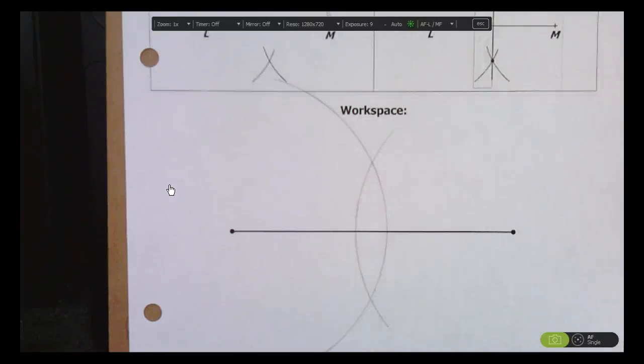So guess what? Those two intersection points that you can see show you where the perpendicular bisector is going to go.